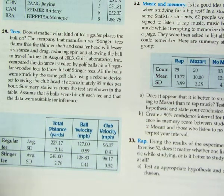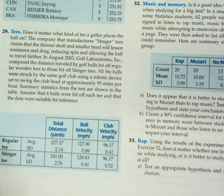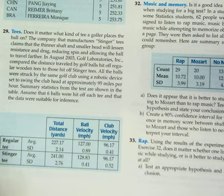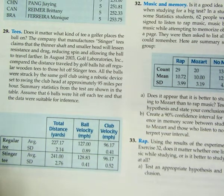All right, so problem 29, we have this data here, and we had to test, we're testing golf tees, and we had to do a test for the initial velocity.